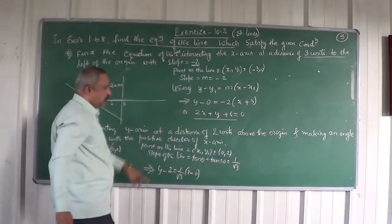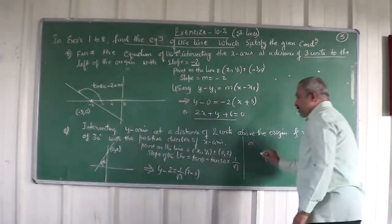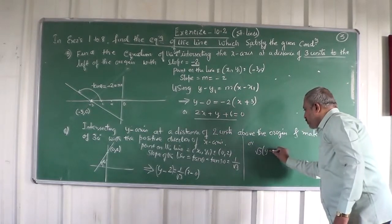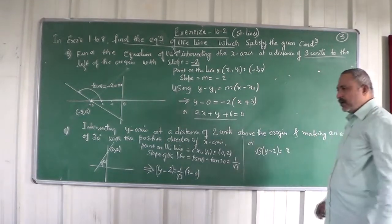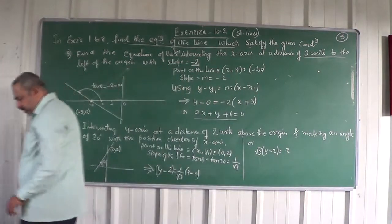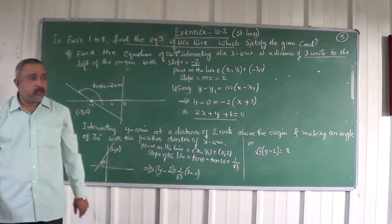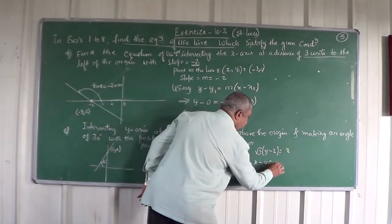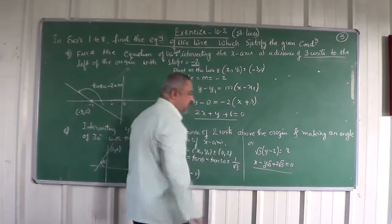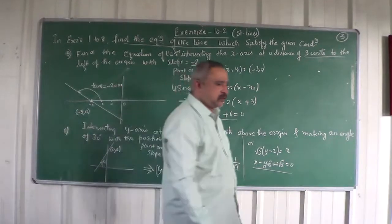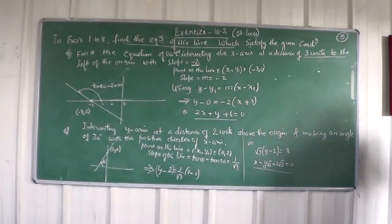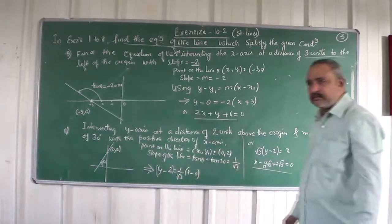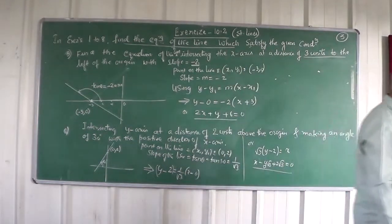1 by root 3, x minus 0. Or you can simplify this further. You have to multiply y minus 2 by root 3. So root 3 into y minus 2 equals x. Or you can write the final answer with simplification: x minus y root 3 plus 2 root 3 equals 0 is the required equation. x minus y root 3...